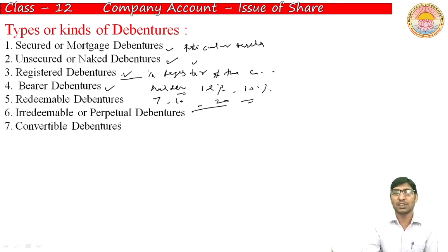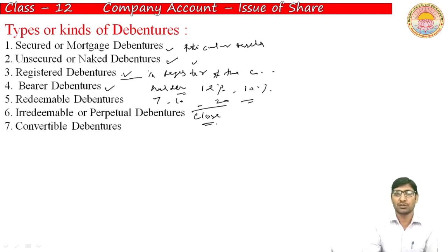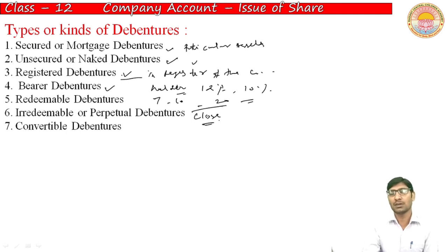Irredeemable or perpetual debentures have continuity — they cannot be redeemed during the lifetime of the company. Repayment is only made when the company is wound up. So if a company closes after 100 years, payment will be made at that point. As long as the company continues, the debenture holders remain as such indefinitely.